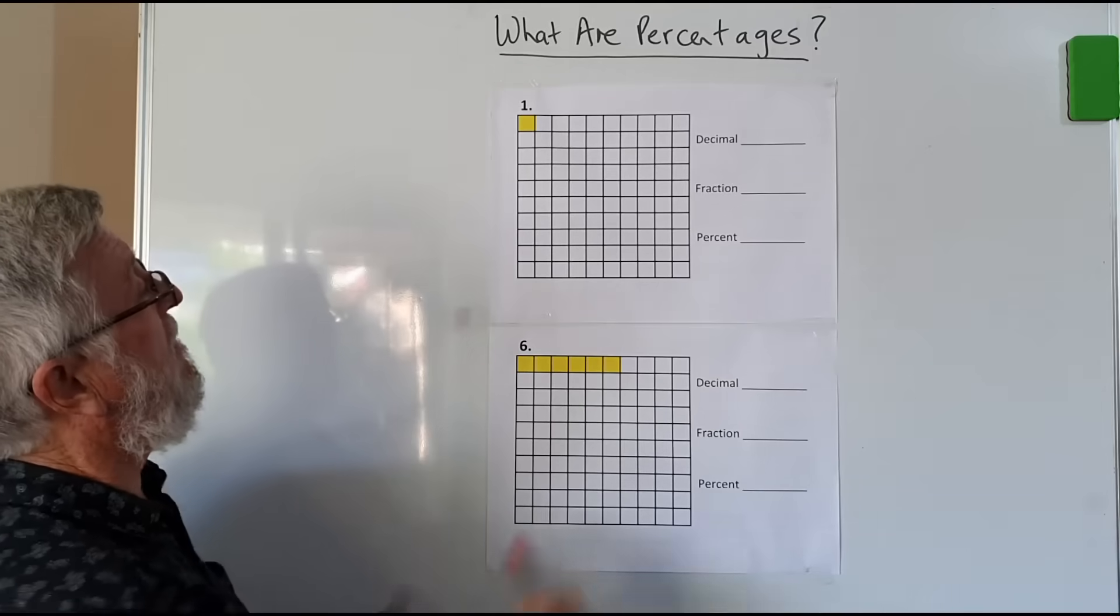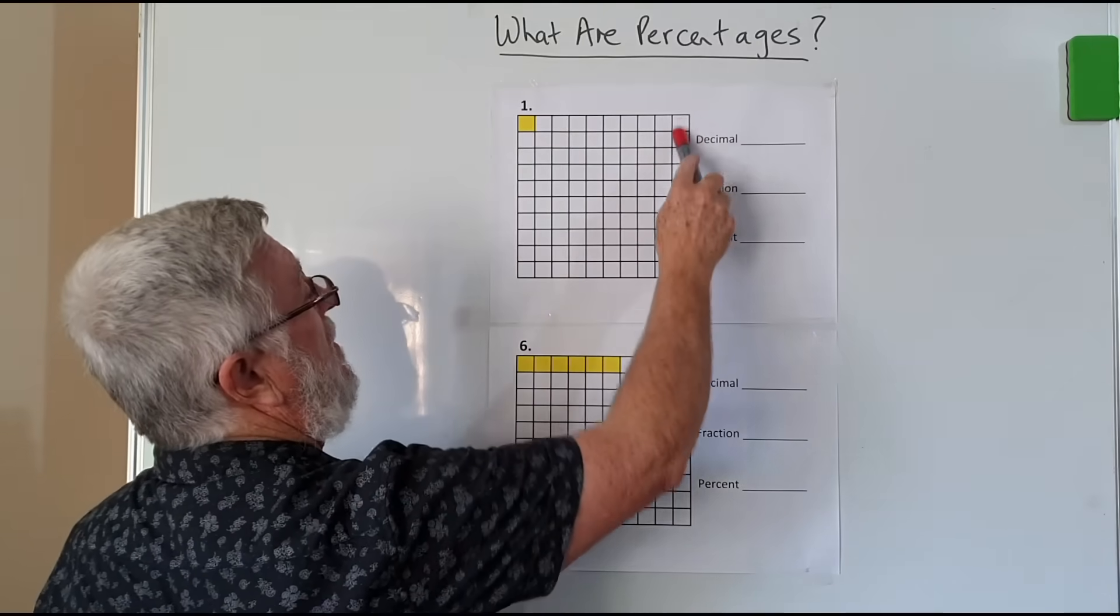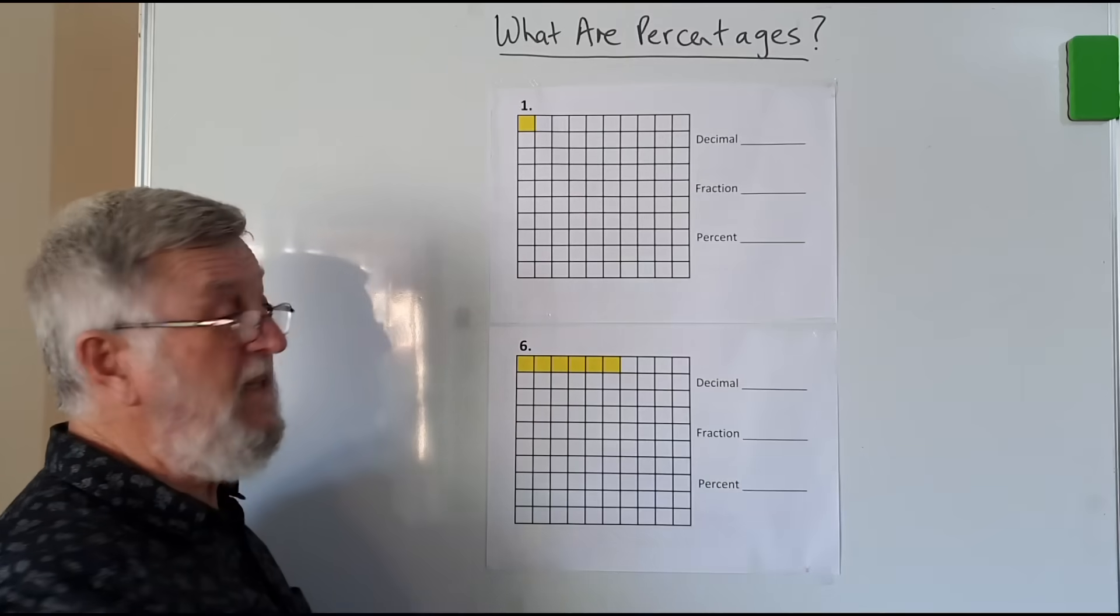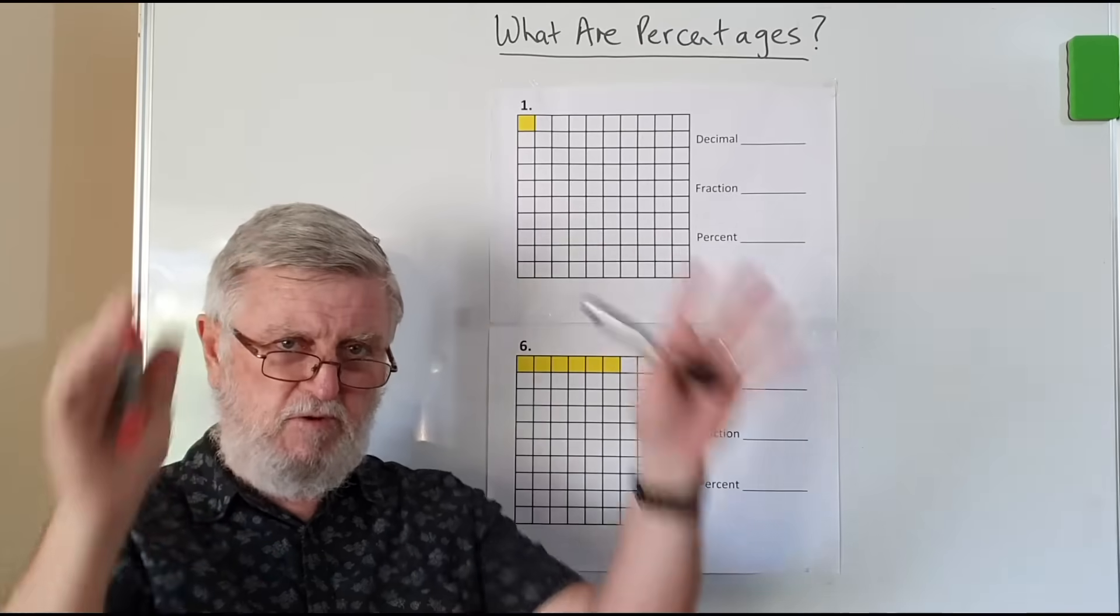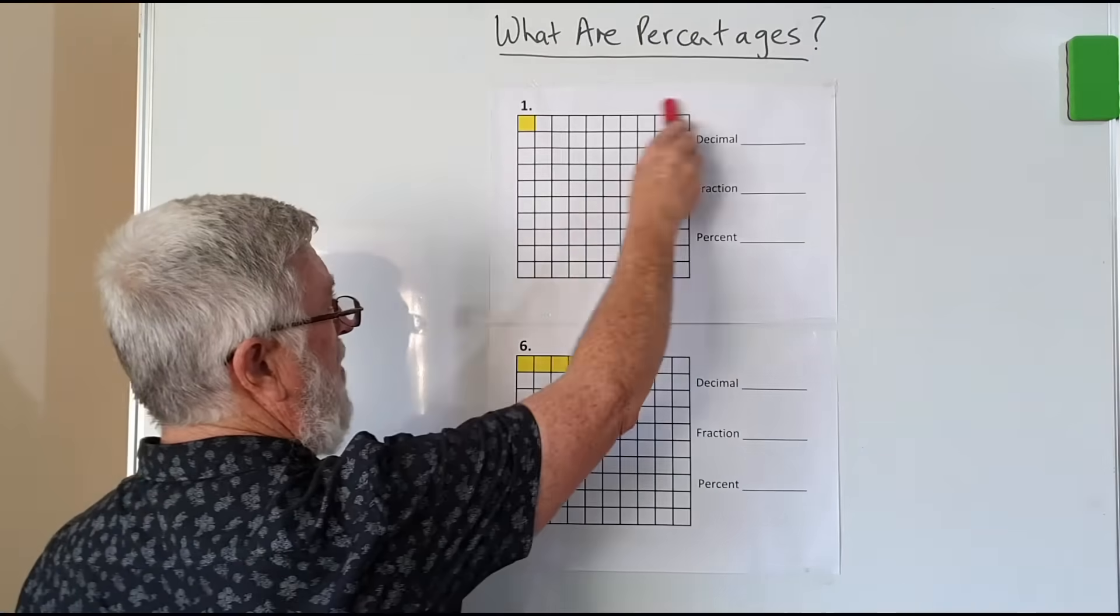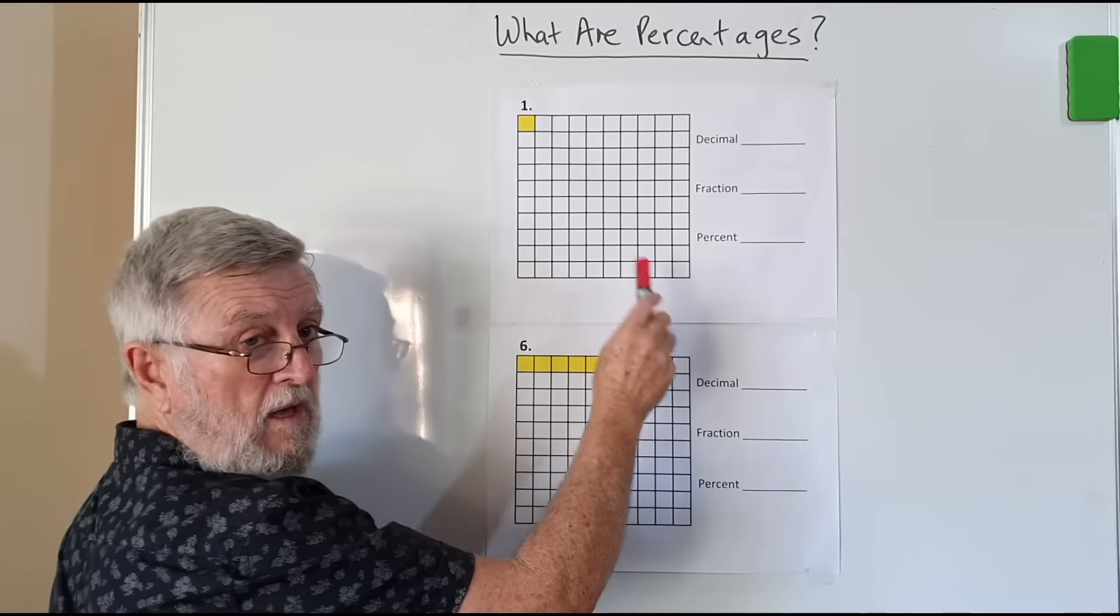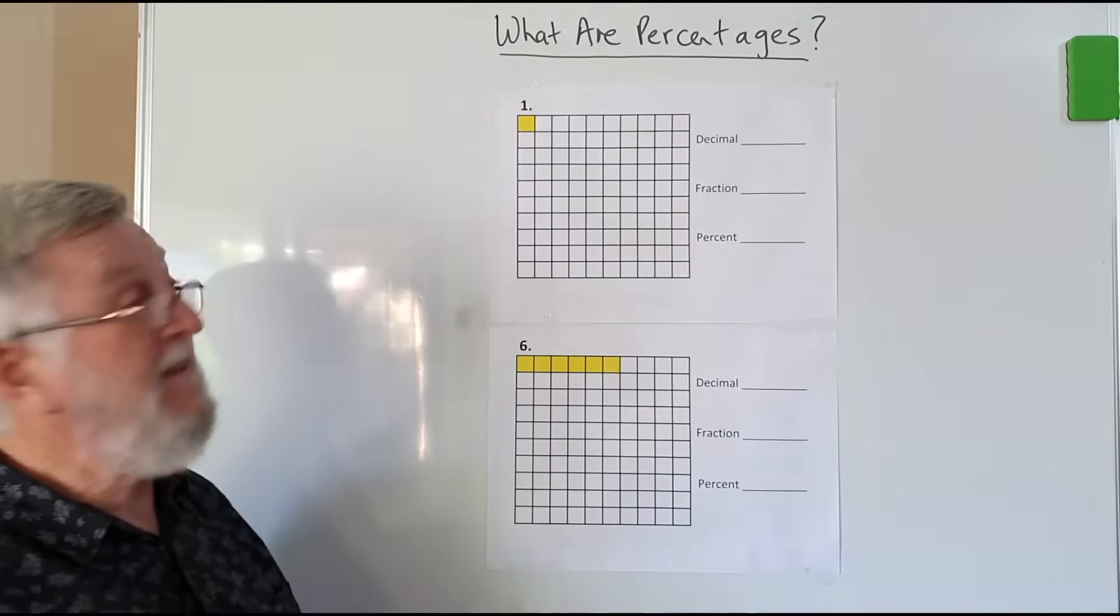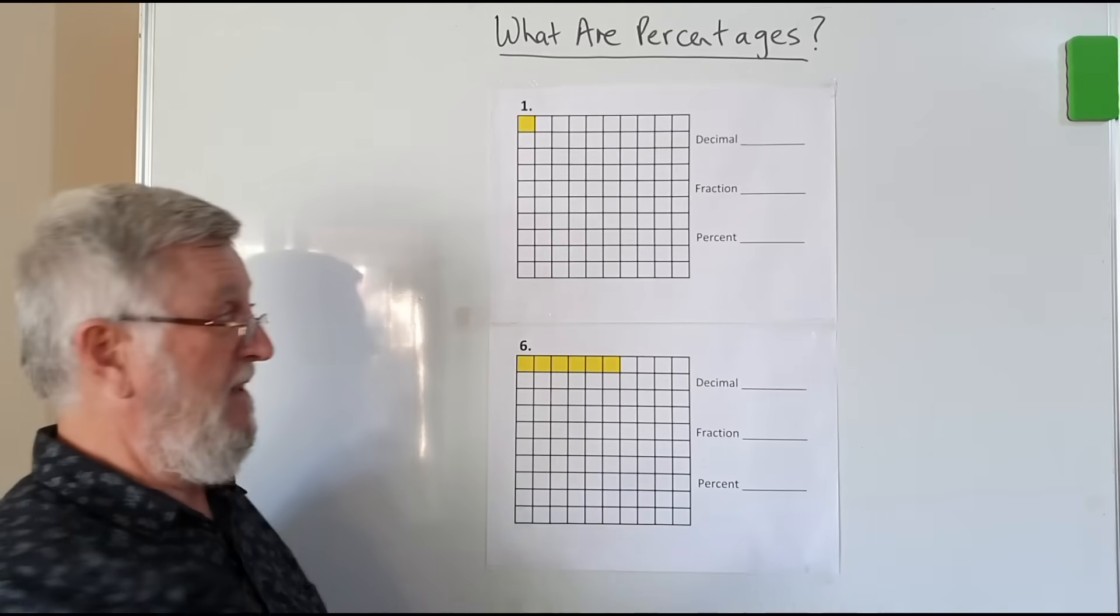If I've got 10 squares by 10 squares, all together I've got a hundred squares. So really simple in concept. If I've got hundred squares, I've basically split that one big square up into a hundred small squares. If I color one of those squares in, that's called one percent.